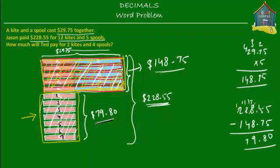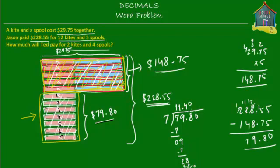If 7 kites cost $79.80, then dividing by 7 gives the cost of 1 kite. 7÷7=1; bring down 9, 7 goes into 9 once with remainder 2; bring down 8, giving 28; 28÷7=4 with no remainder. So 1 kite costs $11.40.